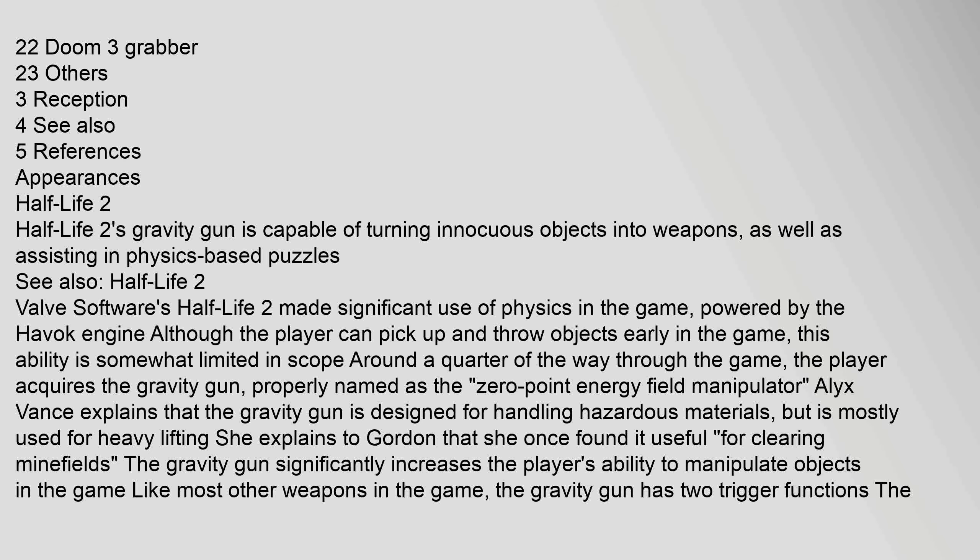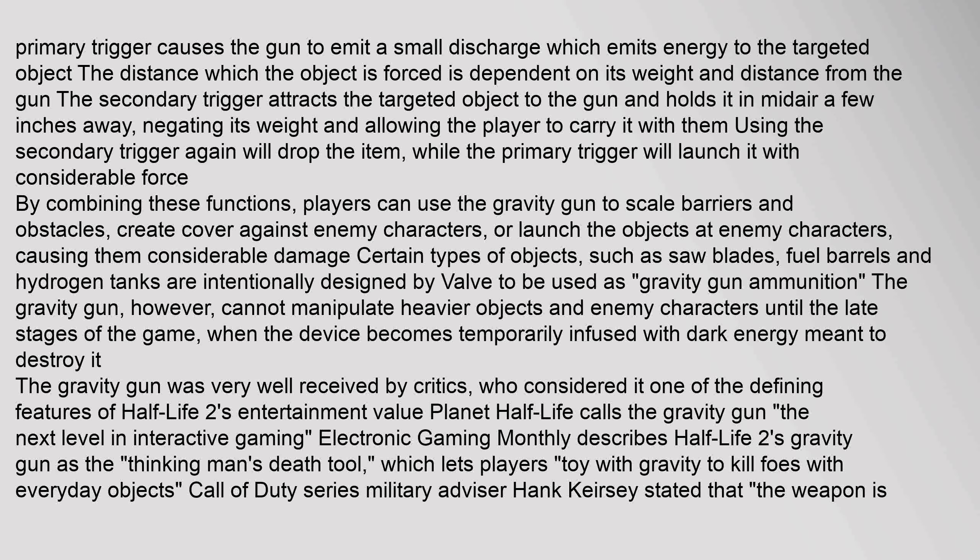The gravity gun significantly increases the player's ability to manipulate objects in the game. Like most other weapons in the game, the gravity gun has two trigger functions. The primary trigger causes the gun to emit a small discharge which emits energy to the targeted object; the distance the object is forced is dependent on its weight and distance from the gun. The secondary trigger attracts the targeted object to the gun and holds it in mid-air a few inches away, negating its weight and allowing the player to carry it. Using the secondary trigger again will drop the item, while the primary trigger will launch it with considerable force. Players can use the gravity gun to scale barriers and obstacles, create cover against enemy characters, or launch objects at enemy characters, causing them considerable damage. Certain types of objects, such as saw blades, fuel barrels, and hydrogen tanks, are intentionally designed by Valve to be used as gravity gun ammunition.